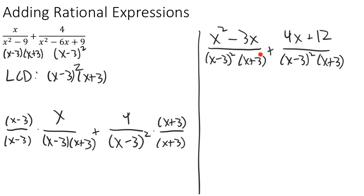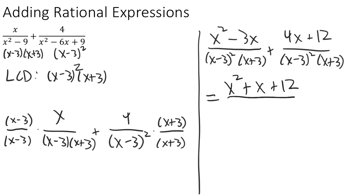Finally, we have the same denominator on both fractions, so we can add the numerators together. Adding x squared minus 3x plus 4x plus 12: the x squared and the 12 have no like terms, but minus 3x and positive 4x combine to give x. Our final result is x squared plus x plus 12 over (x minus 3) squared times (x plus 3).